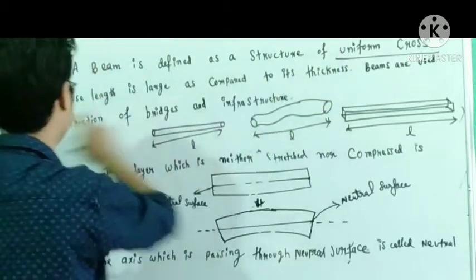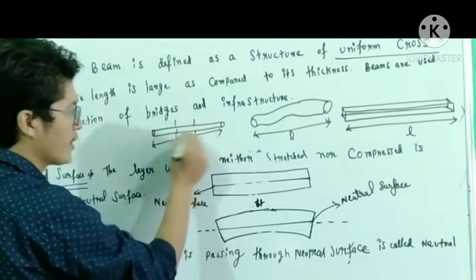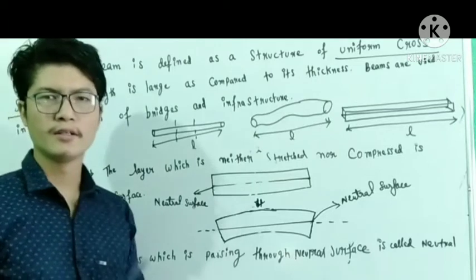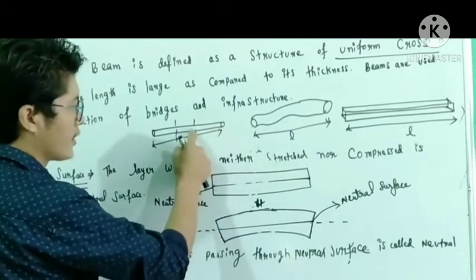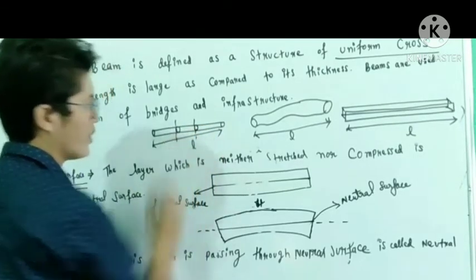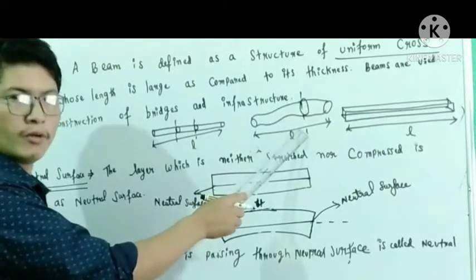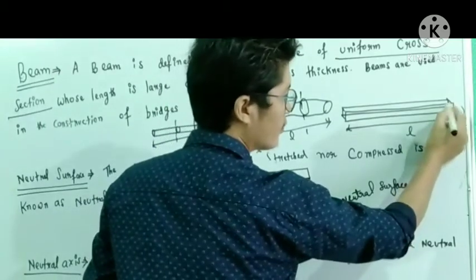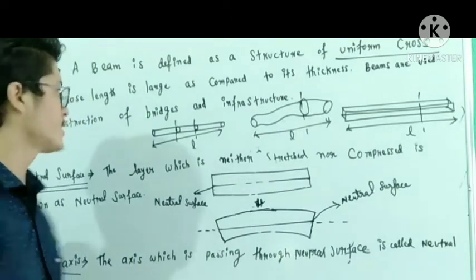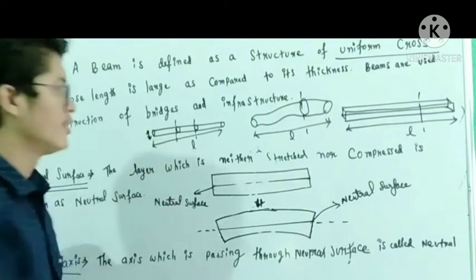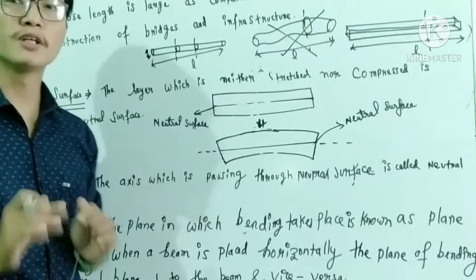First, the beam has a uniform cross section area. A circle is an example of a uniform cross section. If you cut the circle, the cross section remains the same throughout. The beam can have a circular or rectangular cross section, and the length of the beam is very large compared to its thickness.